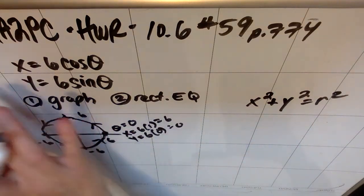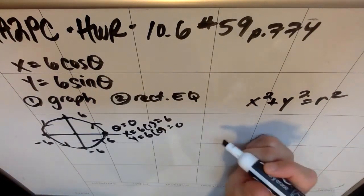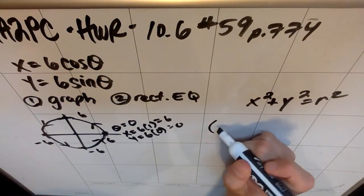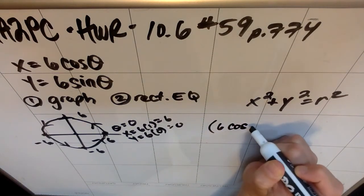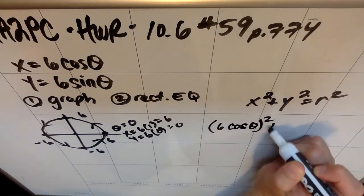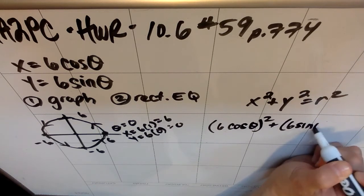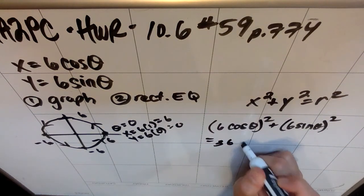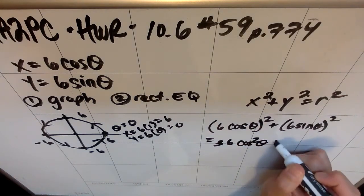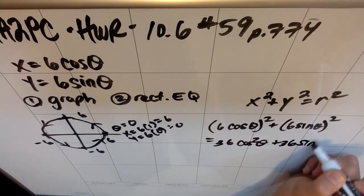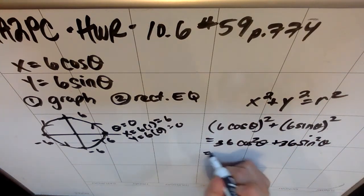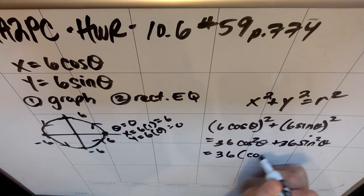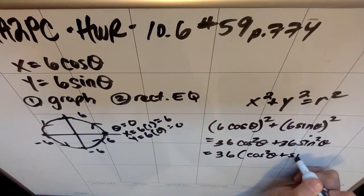But I'm going to show you why it actually is. Let's go ahead and square, so let's do six cosine theta quantity squared plus six sine theta quantity squared. If we simplify that, this is going to be 36 cosine squared theta plus 36 sine squared theta. If I factor out the GCF of 36, I'm left with a trig identity that hopefully we all know pretty well: cosine squared plus sine squared is one, so I get that this is 36.